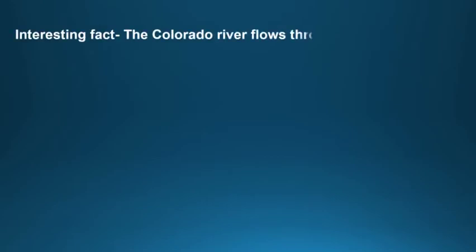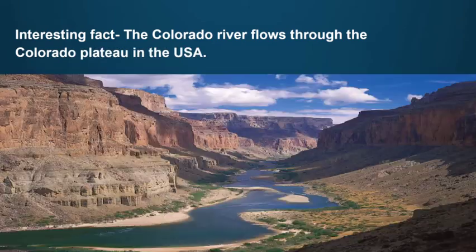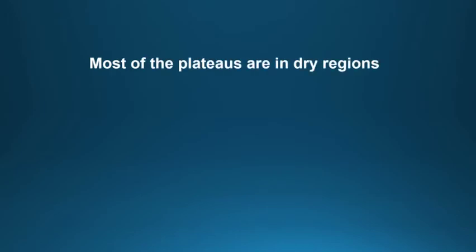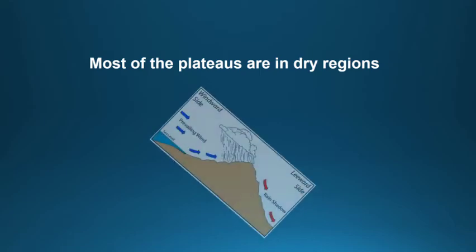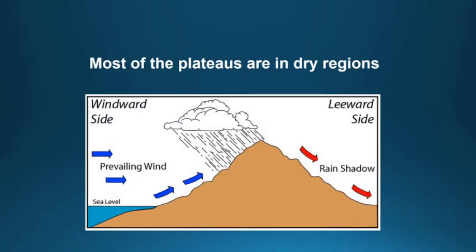Interesting fact: the Colorado River flows through the Colorado Plateau in the USA. Other examples are the Colorado Plateau in North America and the Bolivian Plateau in South America. Let's read about some general facts about plateaus. Most of the plateaus are in dry regions — that is, these areas receive very little rainfall. Plateaus are also located on the leeward side of the mountain.